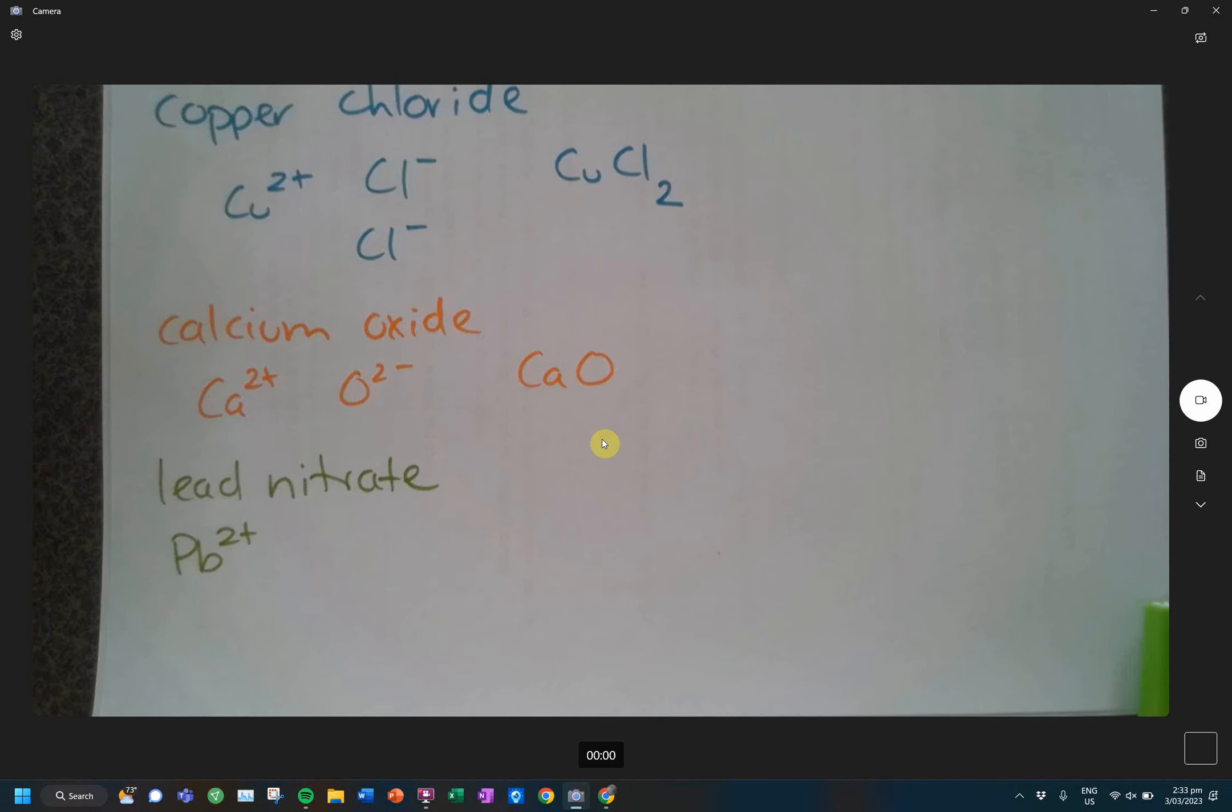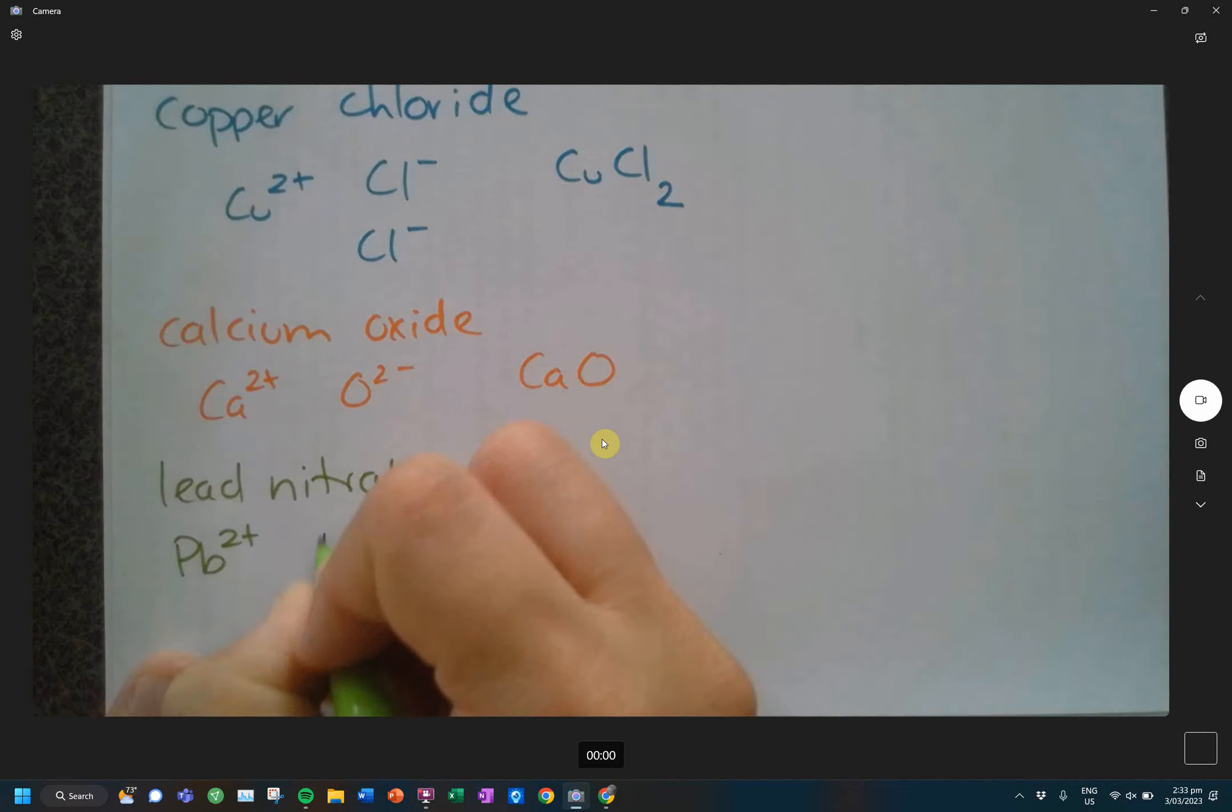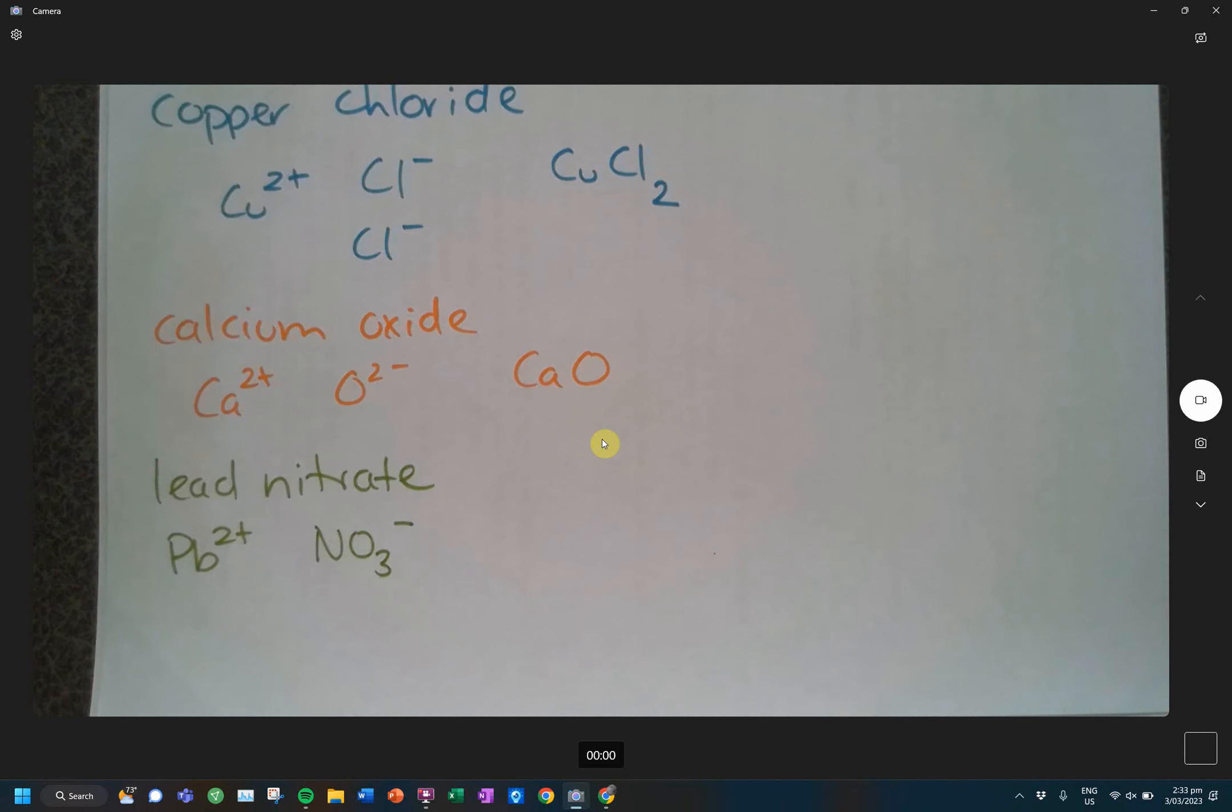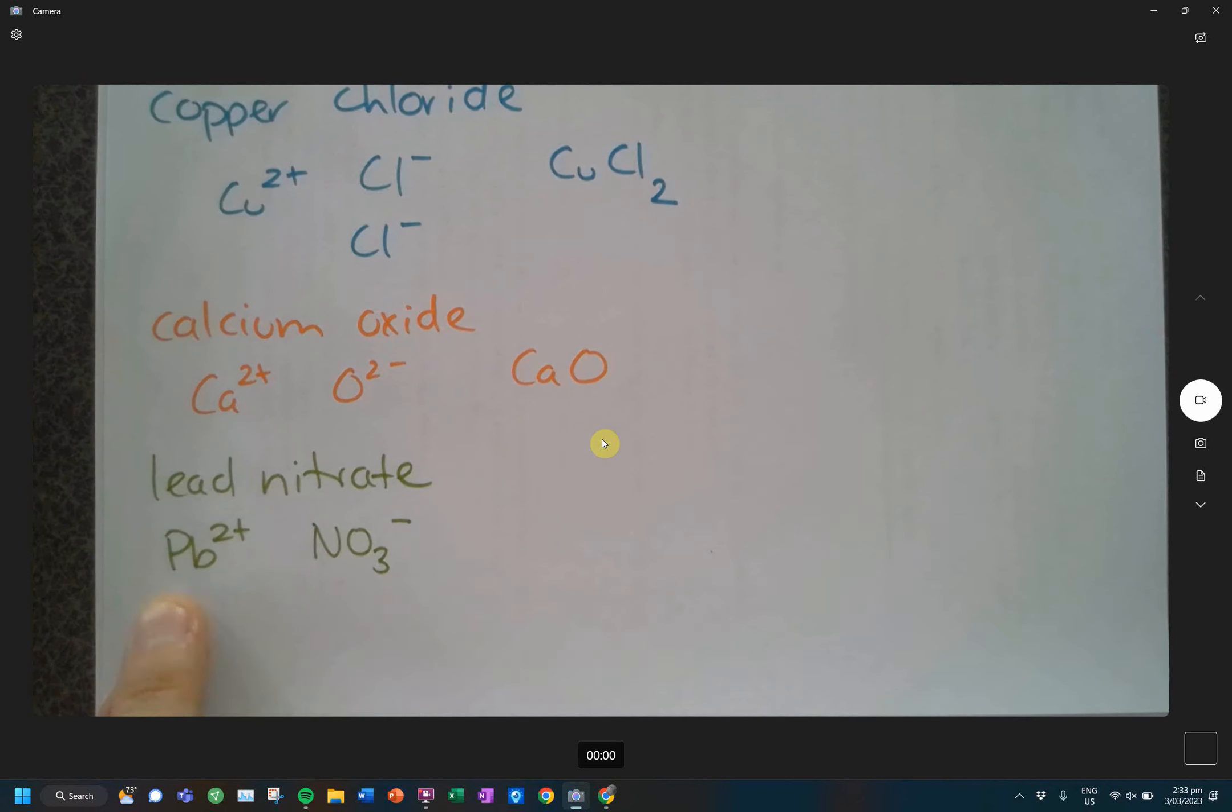However, bad news is that lead is really toxic, and the lead ions leached into the water, and then people went crazy. Because lead is not good for you. Nitrate. NO3 minus. How many nitrates do I need? Two. Because you see how I have positive two, negative one.